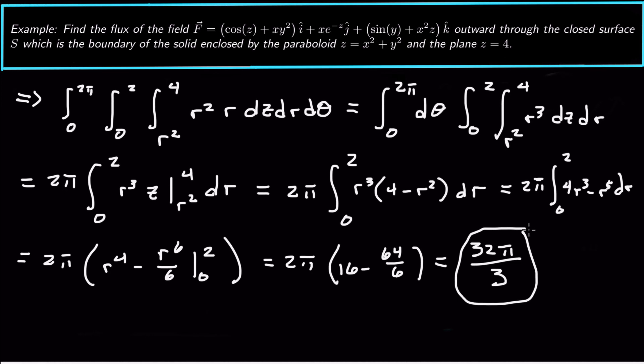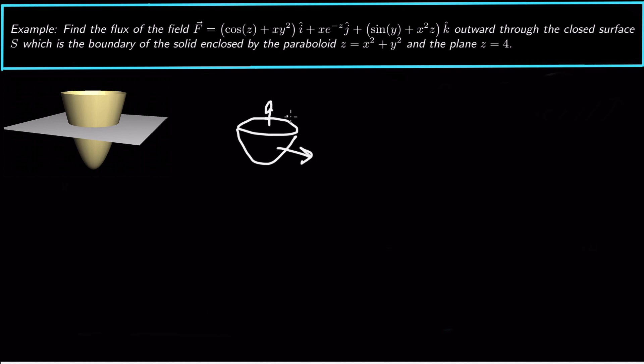And that is the flux of this field outward through the surface bounded by the paraboloid z = x² + y² and the plane z = 4. If you had to do the surface integral directly, what you would have to do is find the flux out through the paraboloid, and then find the flux upward through the disk cap at the top. So there are actually two separate surfaces — S1 and S2 — that make up the closed surface S bounding the solid region. Anyway, that's how we apply the divergence theorem.